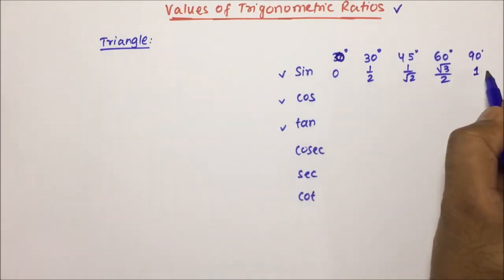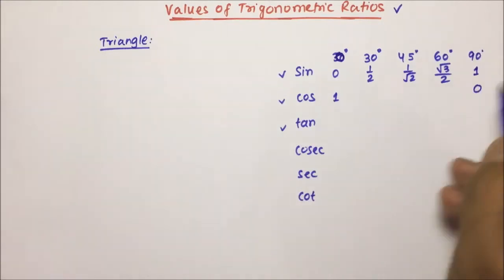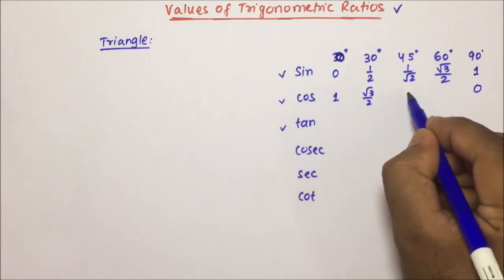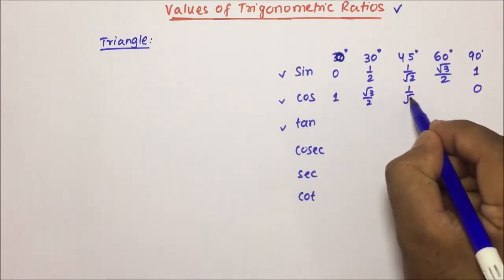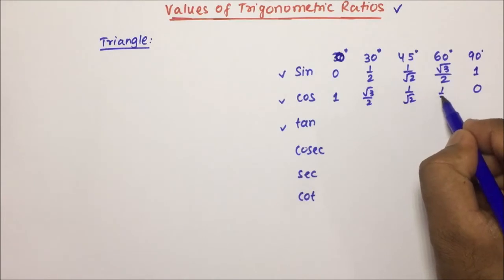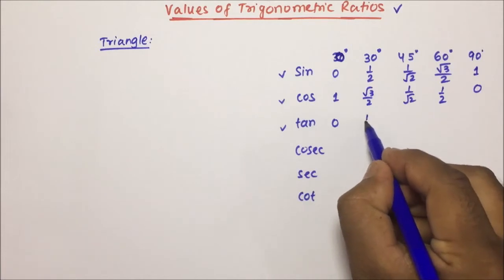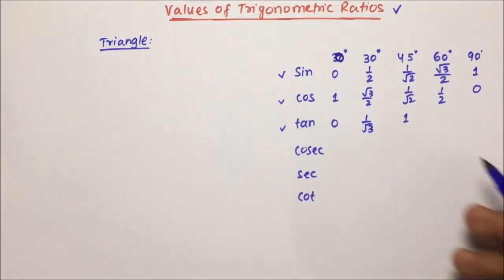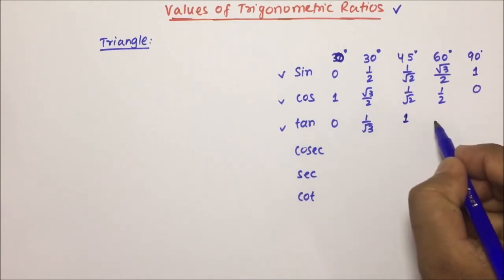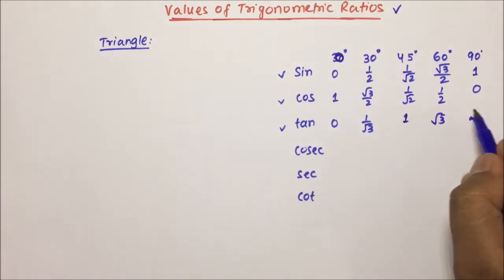Cos 0 will become 1 and cos 90 will become 0. Cos 30 will be √3/2, cos 45 will be 1/√2, and cos 60 will be 1/2. Now tan: tan 0 will be 0, tan 30 will be 1/√3, tan 45 will be 1, tan 60 will be √3, and tan 90 will be infinity, that is not defined.